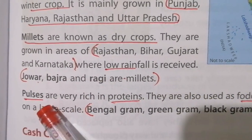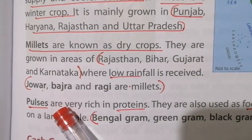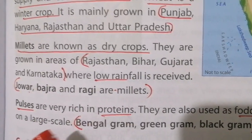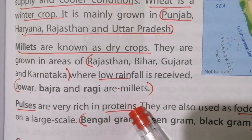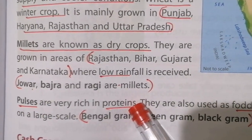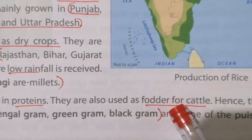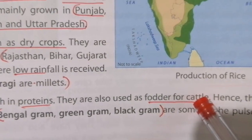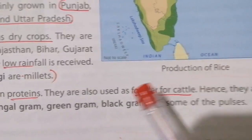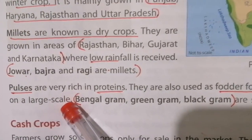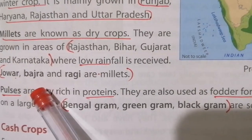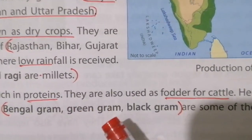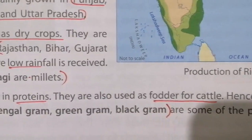The next type is pulses. Pulses are very rich in protein. They are also used as fodder for cattle — fodder being the food for cattle — and hence they are grown on a large scale. Examples of pulses are Bengal gram, green gram, and black gram.